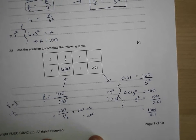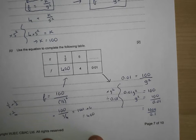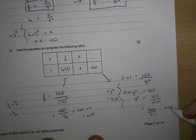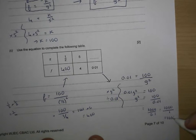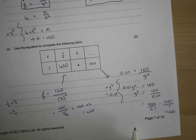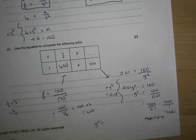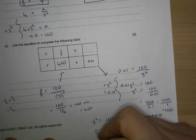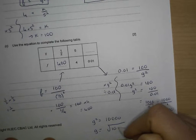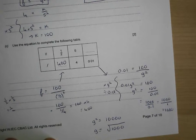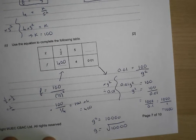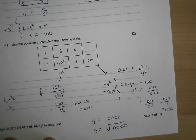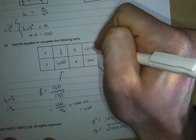So we get g squared is equal to 10,000. What's g going to be equal to? g is going to be equal to the square root of 10,000. Are there two numbers that multiply together to make 10,000? What about 100 times 100? I think that works. 100 times 100 is 10,000, so I think g is going to be equal to 100.